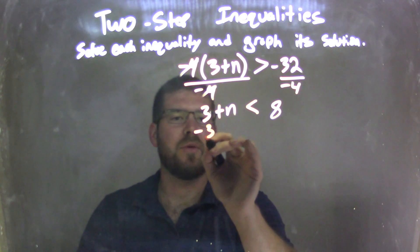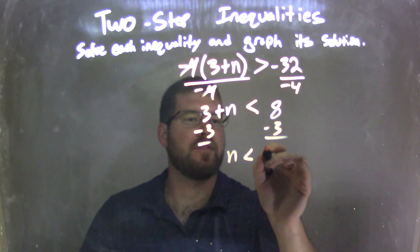So now I need to subtract 3 to both sides. We get n by itself, and we have n is less than 5.